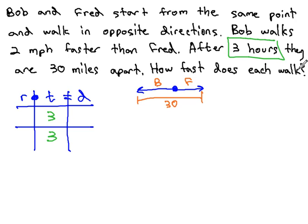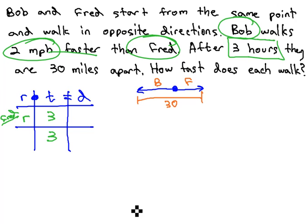As far as their rates or speeds, we're told that Bob is 2 miles per hour faster than Fred. We don't know Fred's rate, so let's let Fred, we'll label this here, Fred we're just going to call R, and Bob, to show 2 miles per hour faster, would be that rate plus 2.